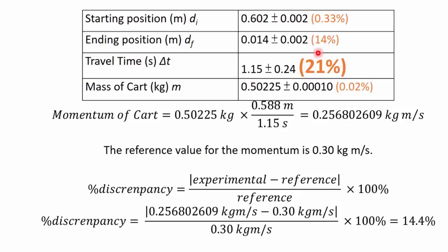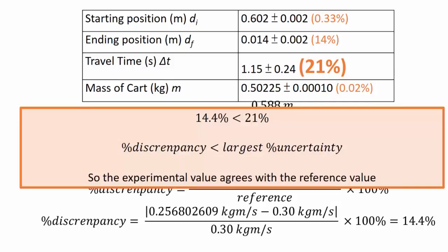So then this becomes our cutoff, whether or not we're acceptable or not. So in this case, 14.4% is less than 21%, meaning our percentage discrepancy is less than our largest percentage uncertainty.